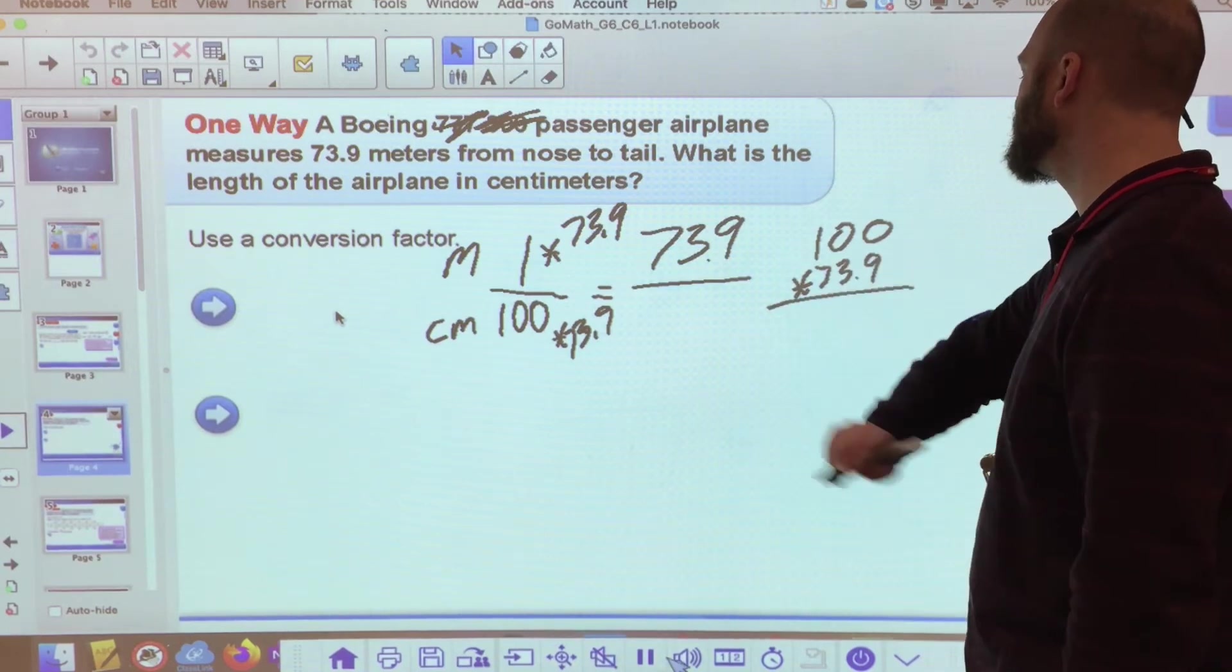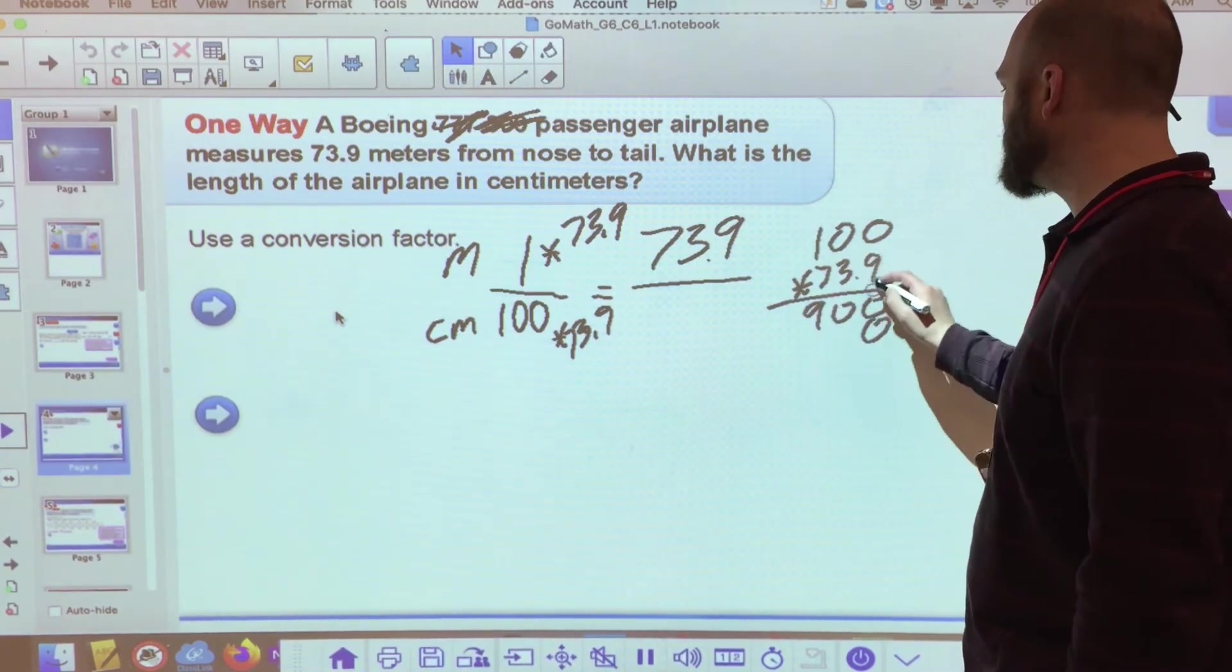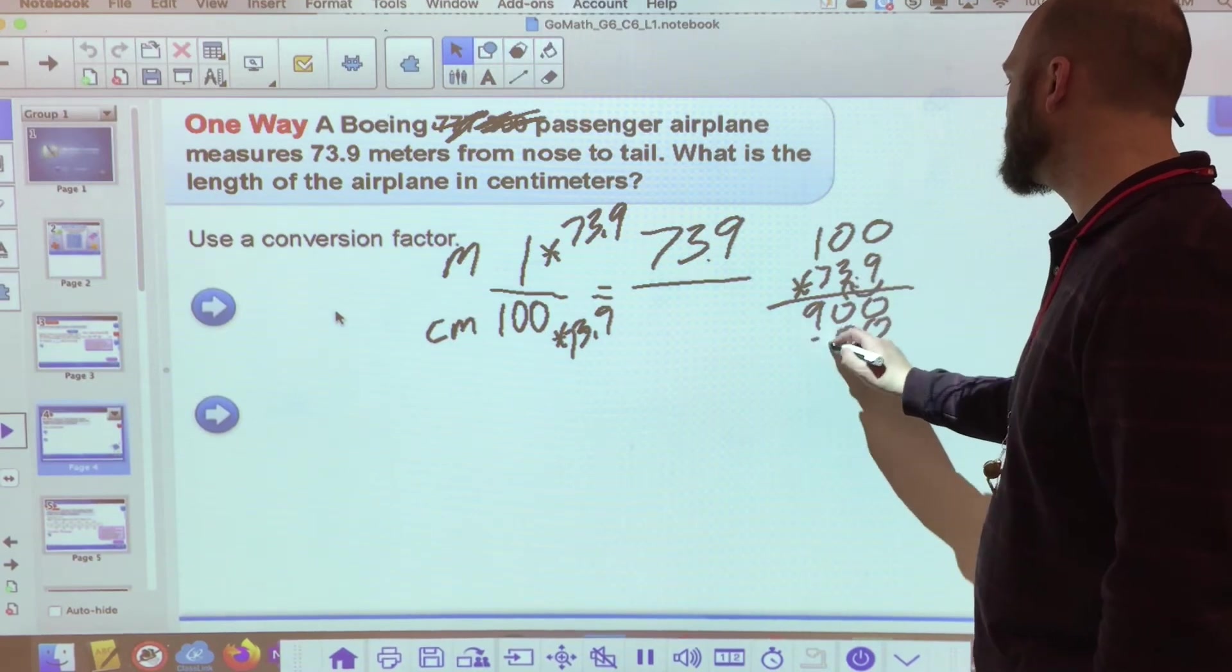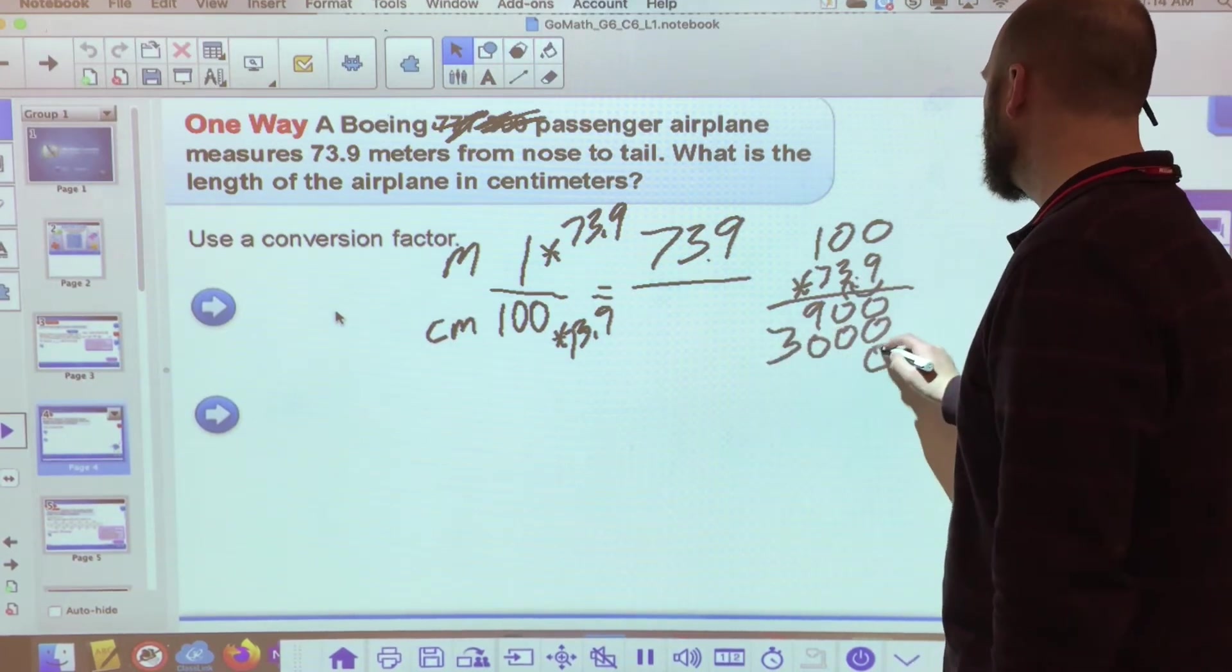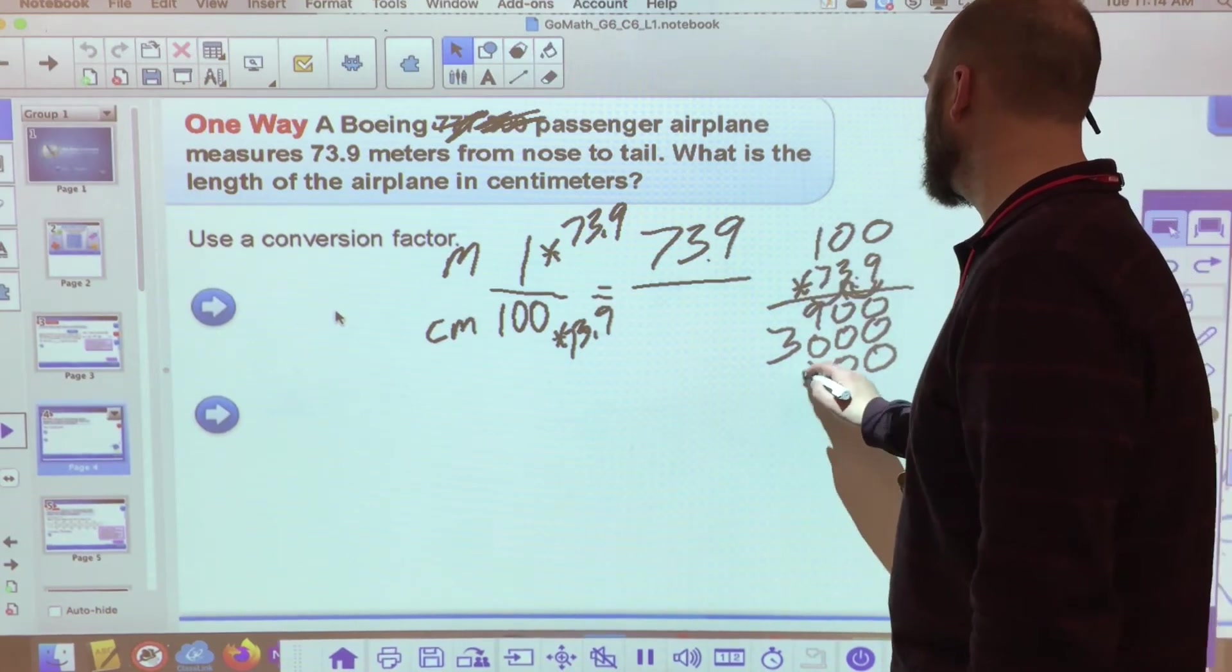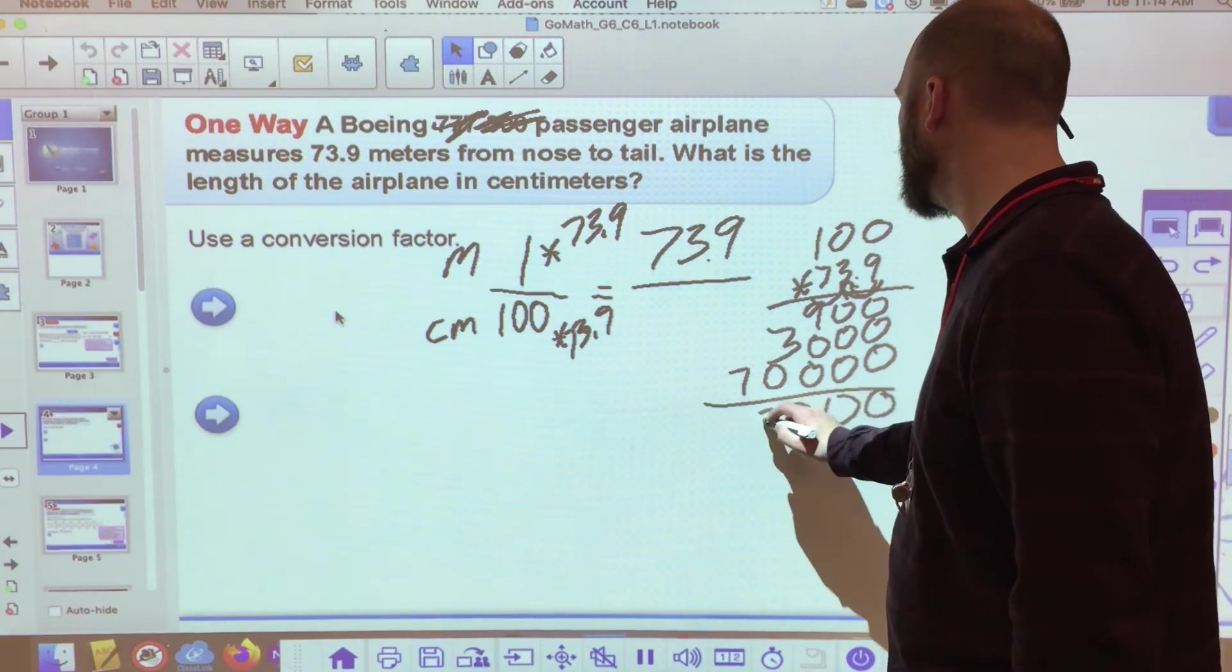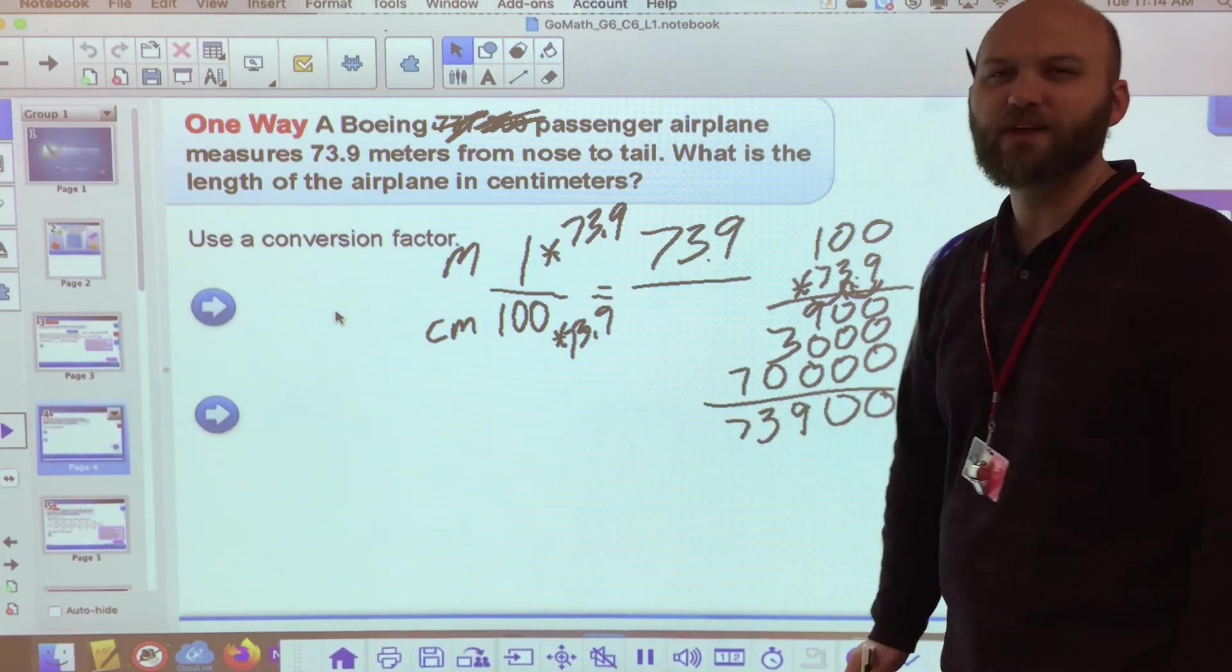Seventy-three and nine-tenths times one hundred. And I get zero, zero, nine. Place value because I moved over one. Zero, zero, three. Two more place values because I moved over two. Zero, zero, seven. Add it all up. And I get seventy-three thousand nine-hundred,